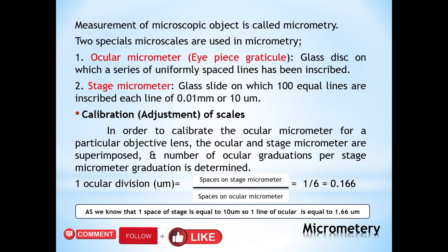The last technique used in cell biology is micrometry. Micro means small and meter means measurement. Micrometry can be defined as the measurement of microscopic objects, or the measurement of the actual size of an object using a micrometer under a microscope.